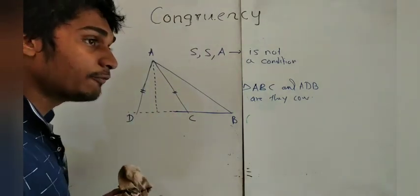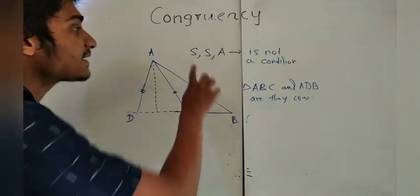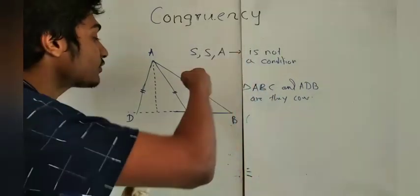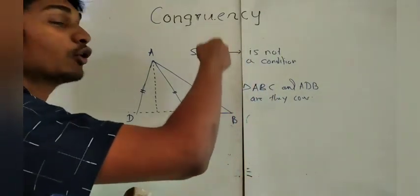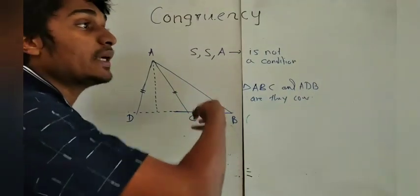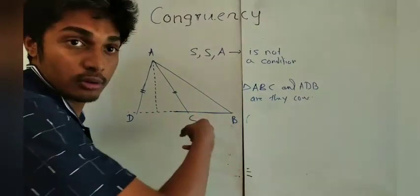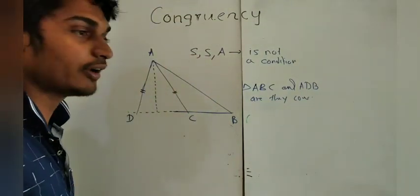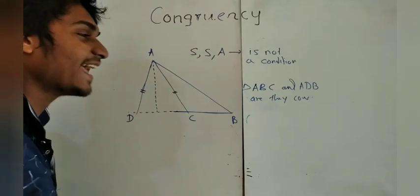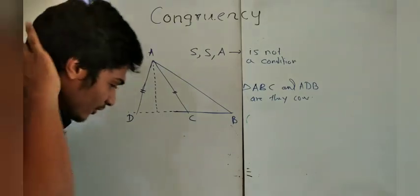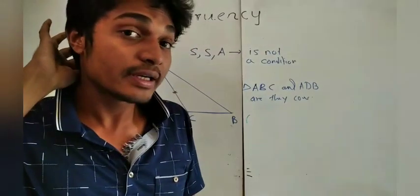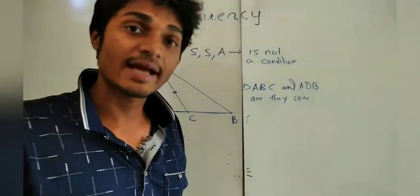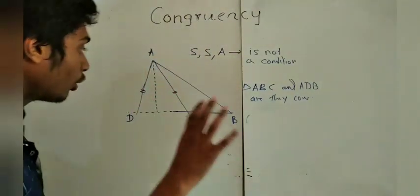If SSA were a valid condition, you could try to prove these congruent — but SSA is not a condition, which is why we cannot. That is a very crucial point to understand.